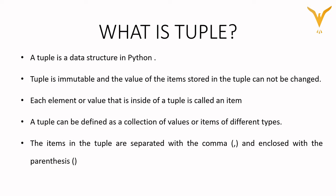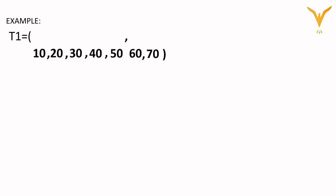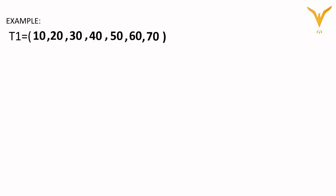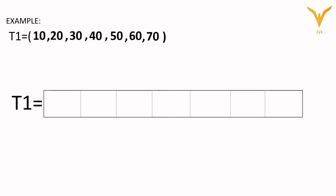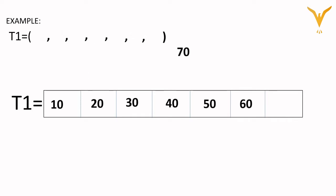So this was all about the tuple. Let's take an example. Here we have created a tuple called t1. For creating a tuple we are using round brackets and the elements are separated by commas. In the back end, t1 tuple will be created, memory will be allocated, and all the elements stored inside the tuple are stored in memory like: 10, 20, 30, 40, 50, 60 and 70.